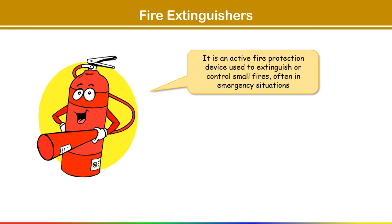Active fire protection devices include fire alarm, sprinkler system, fire extinguisher, smoke detector, fire suppression system, and fire hydrant. These are all active fire protection devices because to operate them we need some action. In simple language, a fire extinguisher is a portable device designed to put out or control small fires.